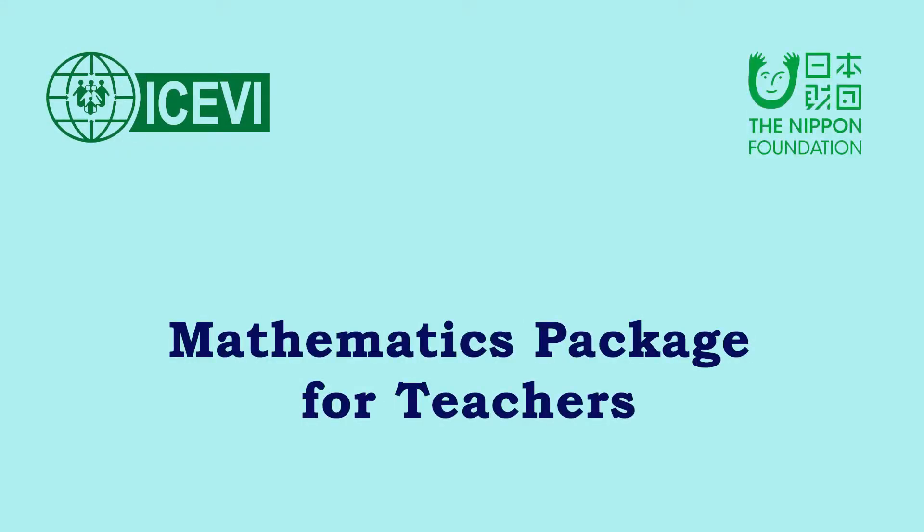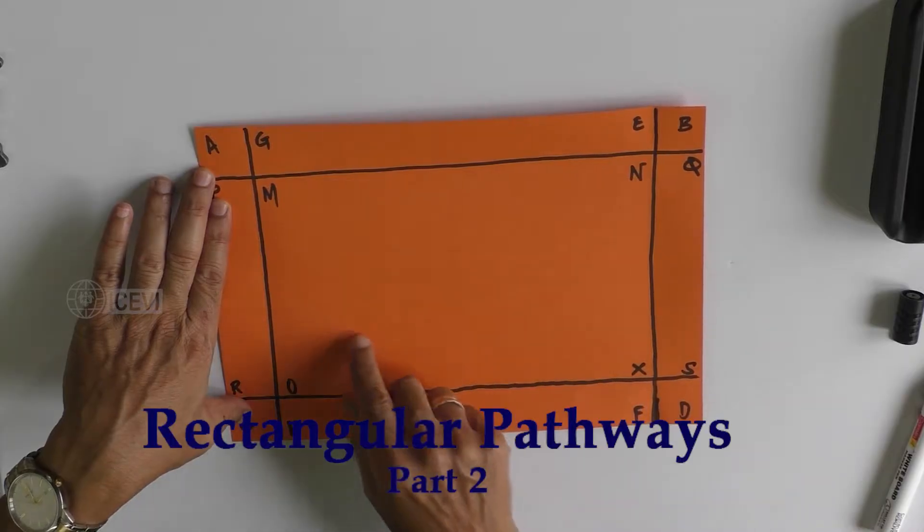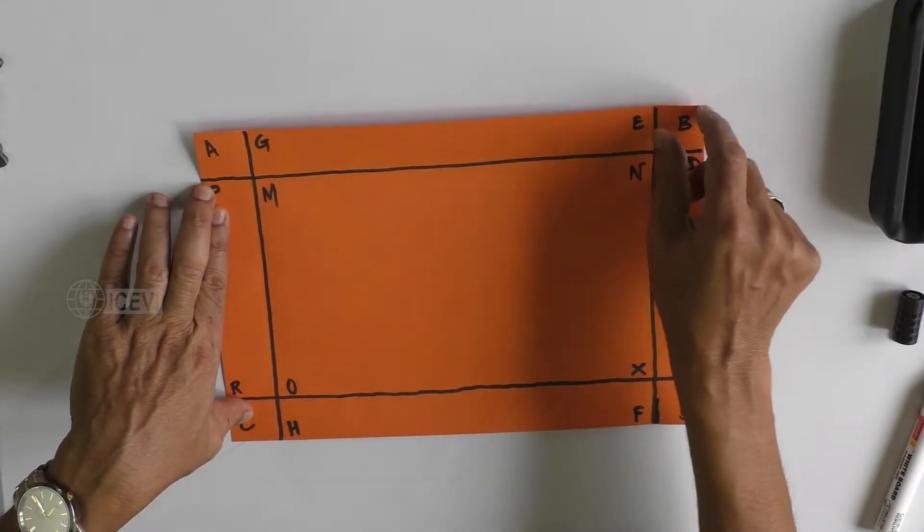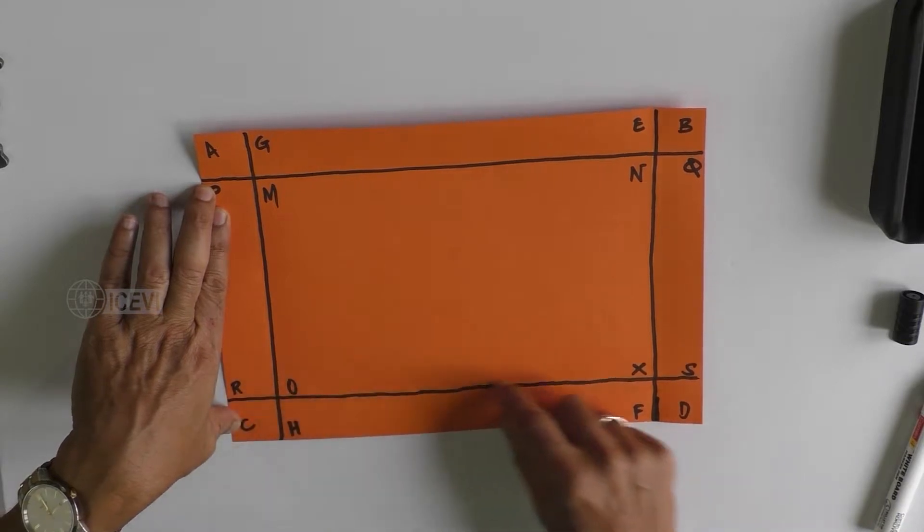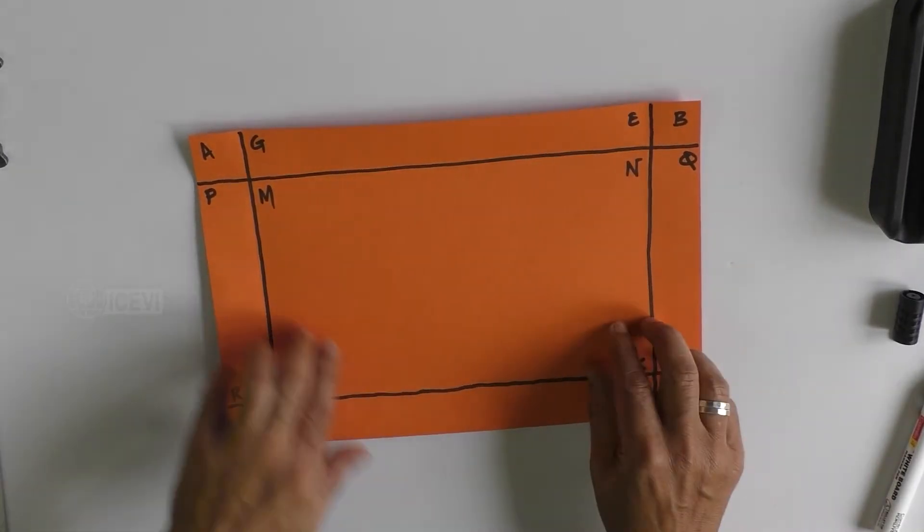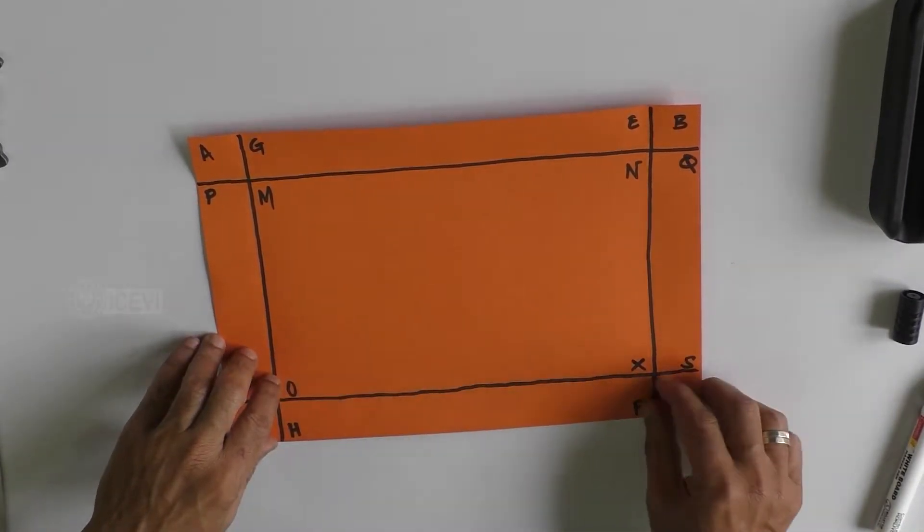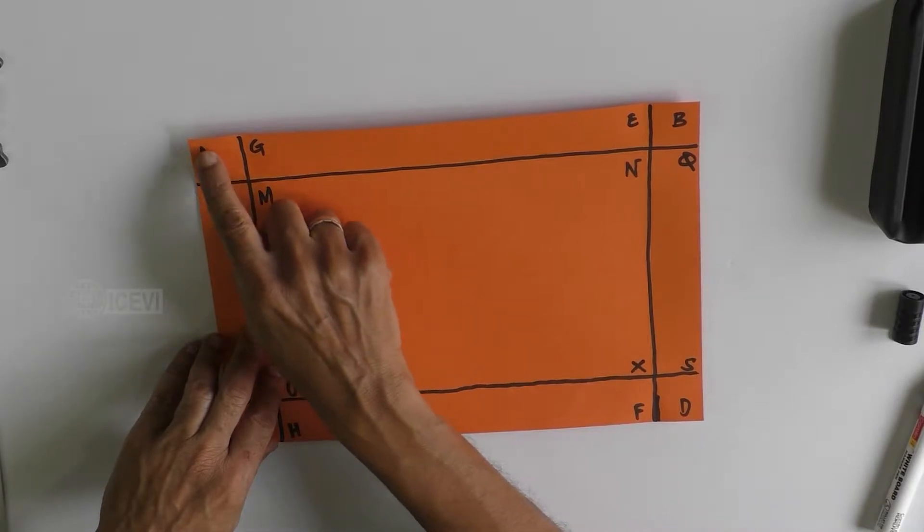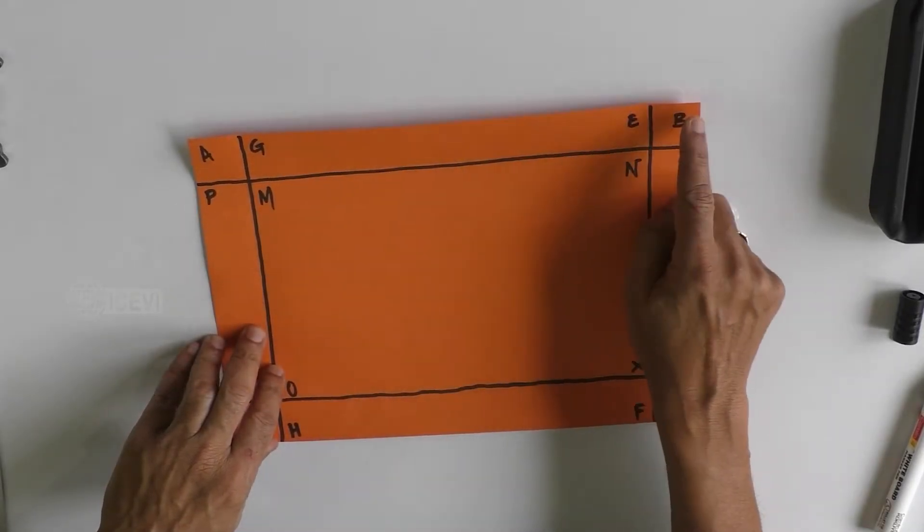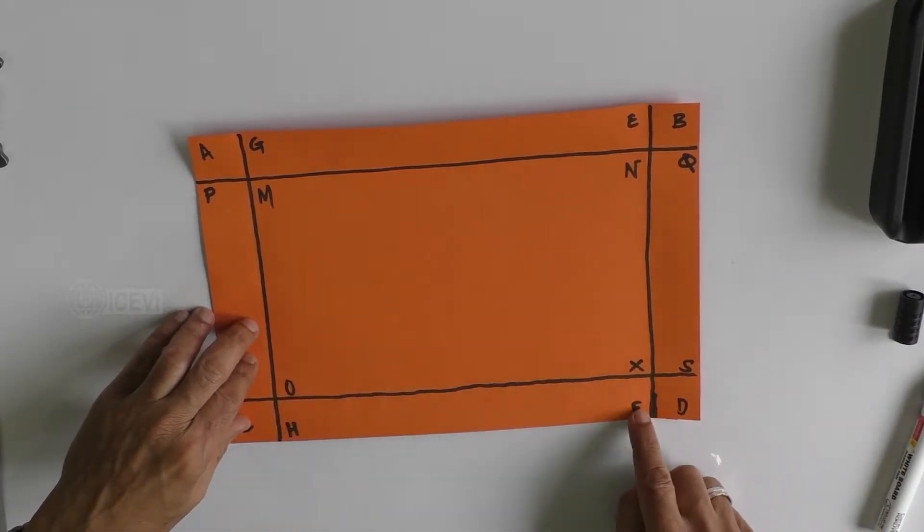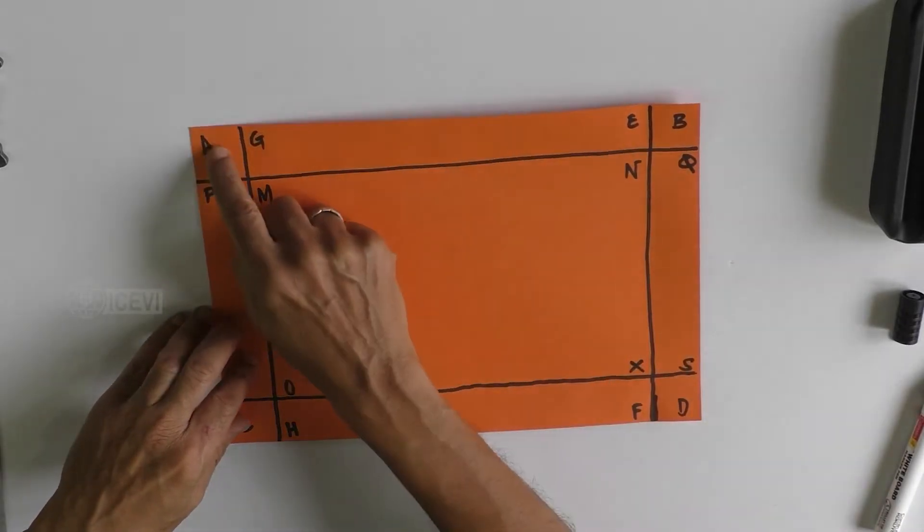The ICBI Nippon Foundation mathematics package for teachers, rectangular pathways part 2. Now assume that you have the rectangular pathway on the outside of the field, the pathway on all sides of the plantation area with equal width. In that case you will get AGPM, EBNQ, ROCH, and XSFD, the four boxes that you get in the corner of the field.